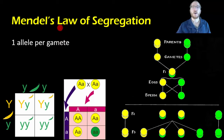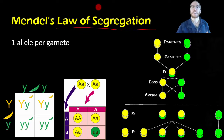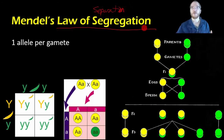The first one is called the Law of Segregation. I know it sounds kind of weird — we don't normally use segregation very often nowadays, it's become kind of a dirty word — but segregation really just means separation. So this is just that we are going to separate something, and it just so happens that something we're separating is going to be the alleles.